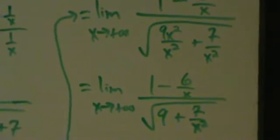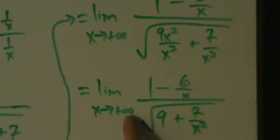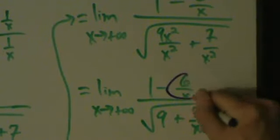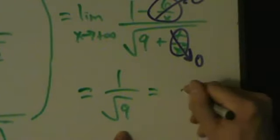Now we're ready to evaluate. As x goes to positive infinity: the 1 on top stays 1, and minus 6 over x goes to 0. On the bottom, 9 is just a constant and stays 9, while 7 over x squared goes to 0 since x squared gets huge. So this limit equals 1 divided by the square root of 9, and the square root of 9 is 3. So the answer is 1 third.